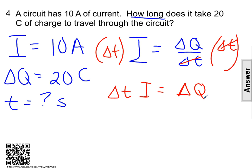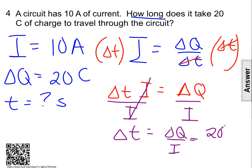I to isolate time as the only variable. All right, Delta T equals the amount of charge divided by the current, equals 20 coulombs divided by 10 amps, which comes out to be two seconds.